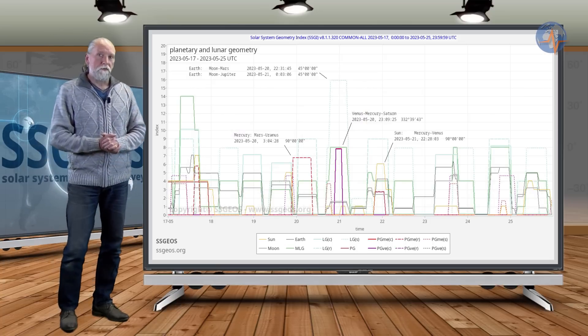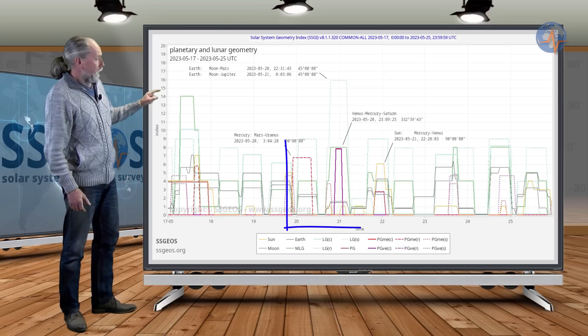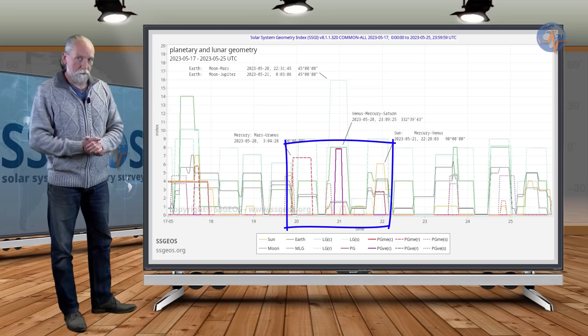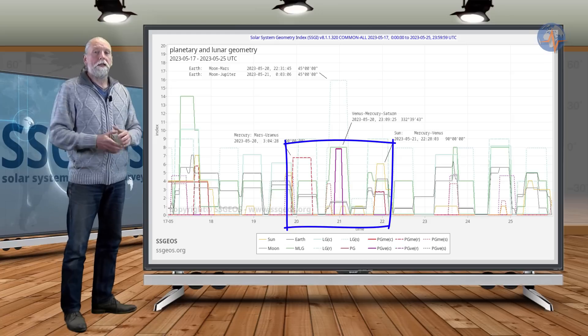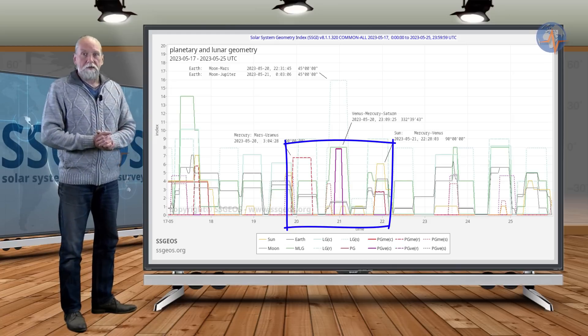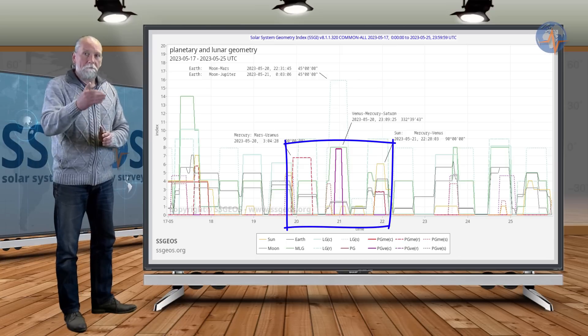What to expect in the coming week: if we look at the SSGI graph for the coming week, we see a clustering of critical planetary geometry on the 20th and the 21st, and also lunar geometry that converges on the 20th and 21st. There is probably going to be a seismic increase into the higher 5 magnitude range.